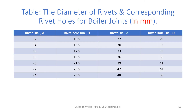This slide shows the rivet and corresponding rivet hole diameters. Standard boiler rivets are present in sizes of 12, 14, 16, 18, 20, 22, 24 mm, then a jump of 3 mm to 27, 30, 33, 36, 39, 42 mm, then a jump to 48 mm. When the rivet diameter is less than 25 mm, the rivet hole diameter is 1.5 mm more than the rivet diameter. For rivet diameters greater than 25 mm, the rivet hole diameter is 2 mm more. For example, for a 27 mm rivet, the hole is 27 + 2 = 29 mm diameter. These are the standard rivet and rivet hole sizes for boilers.